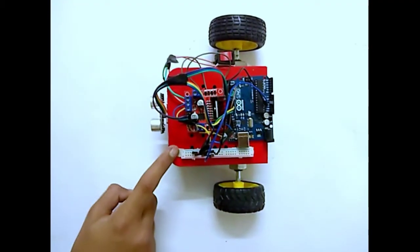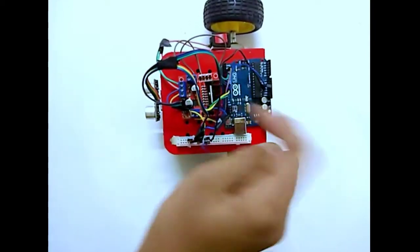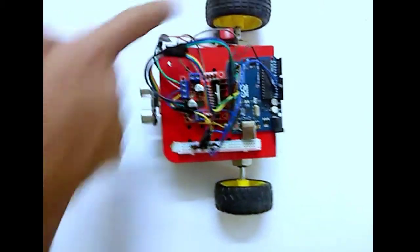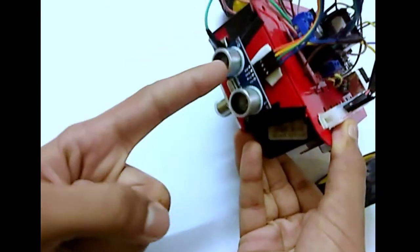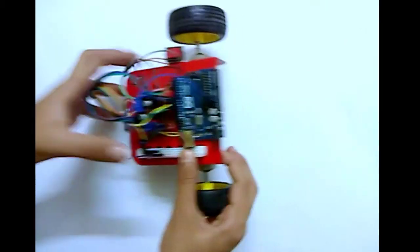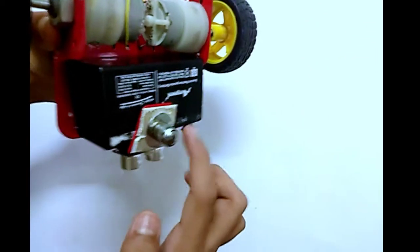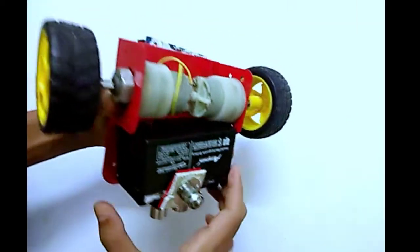On top of the chassis we have the motor driver, Arduino Uno, breadboard and the switch. Then in the front we have connected the ultrasonic sensor. Then we have two 60 RPM motors, a caster wheel and a 12 volts battery connected below.